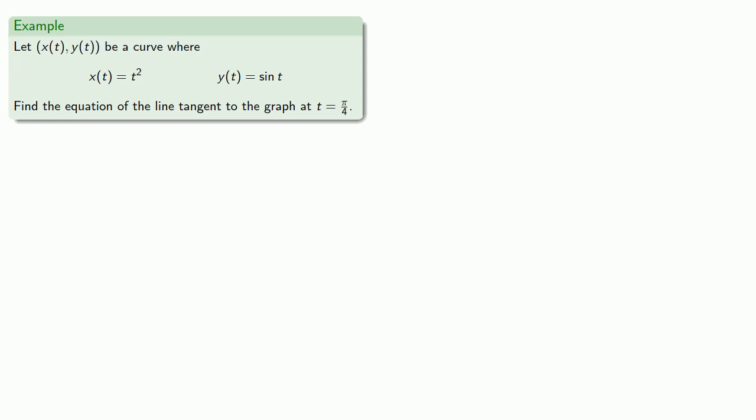For example, suppose x of t and y of t is some curve, where x of t is t squared and y of t is sine of t. And let's do a standard single variable calculus problem and find the equation of the line tangent to the graph at t equal to pi over 4. So the first thing we need to write the tangent line is a point on the curve, and at t equal pi over 4, our x and y values will be...